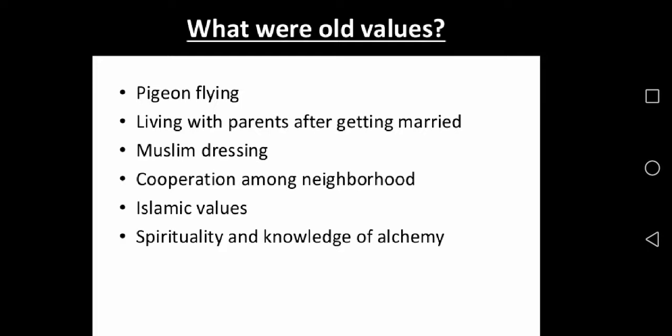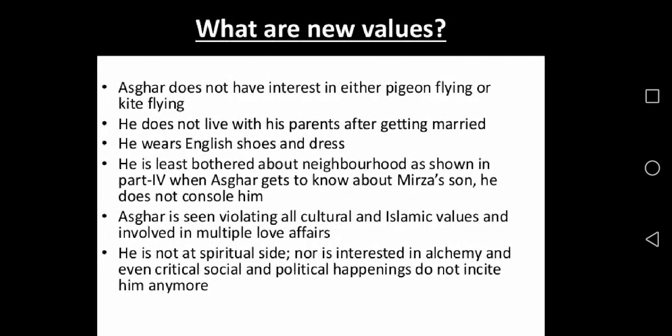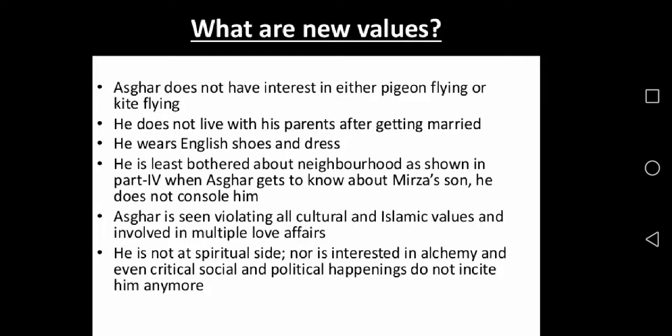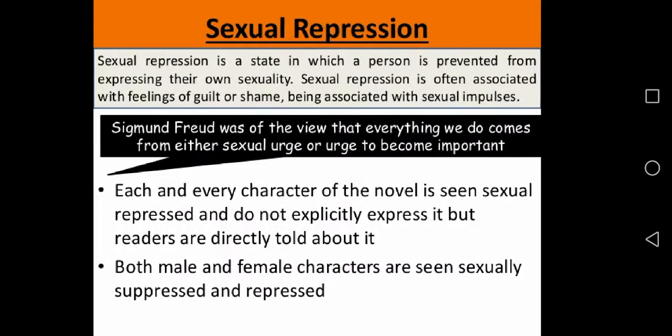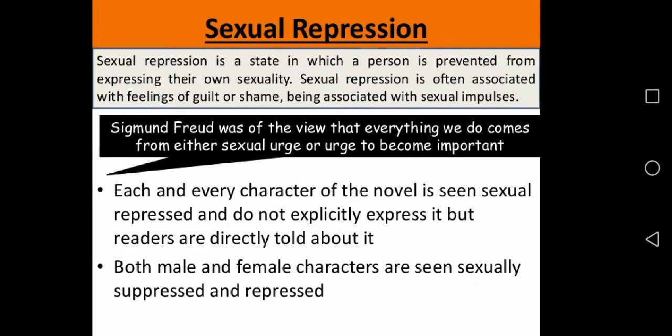The novel is shot through with rich symbolic imagery. The palm tree, the henna plant, dogs, cats, and pigeons refer not only to the behaviours of characters but also to the whole Muslim society.